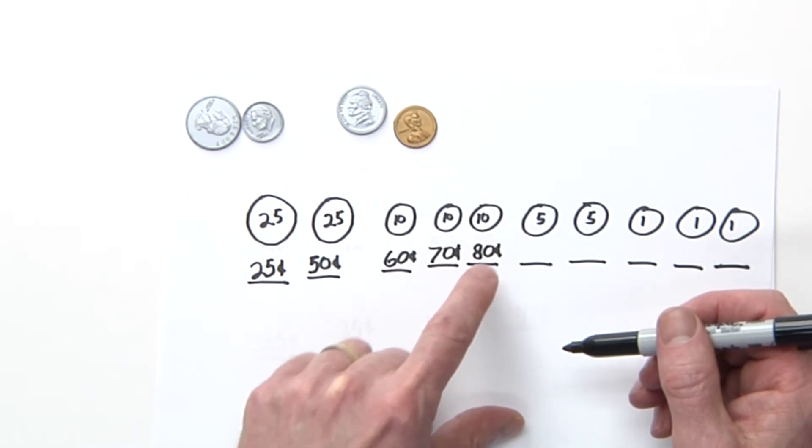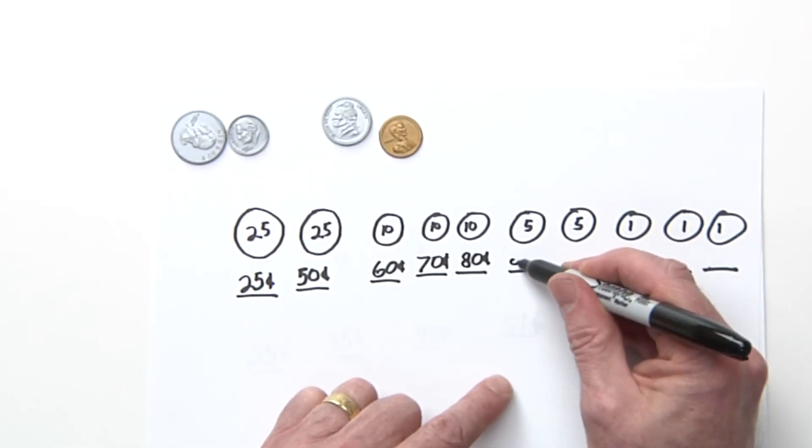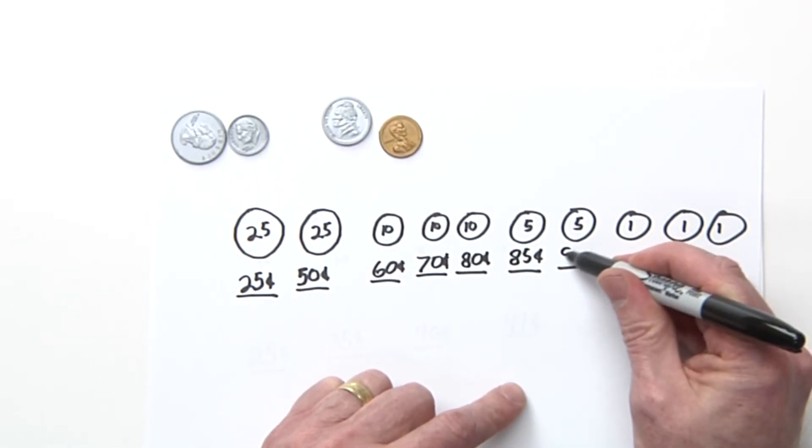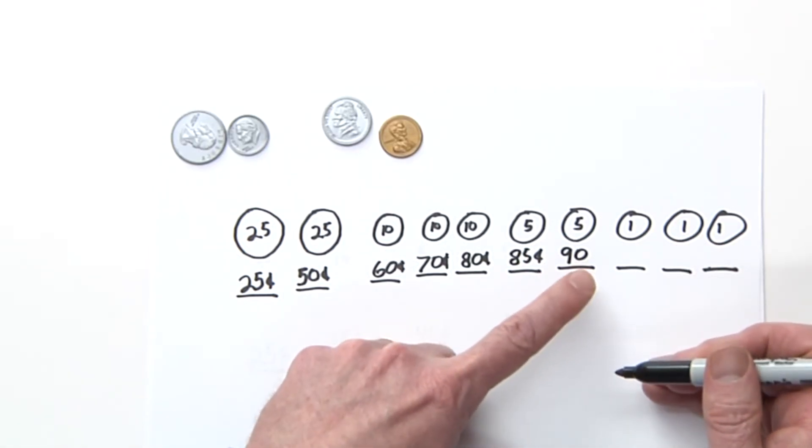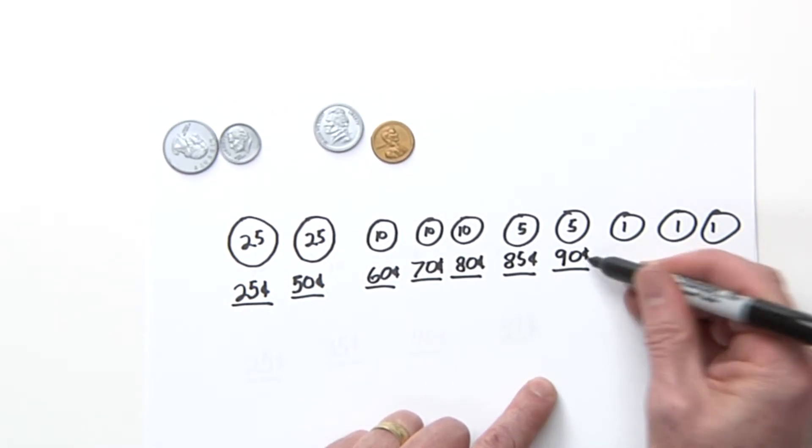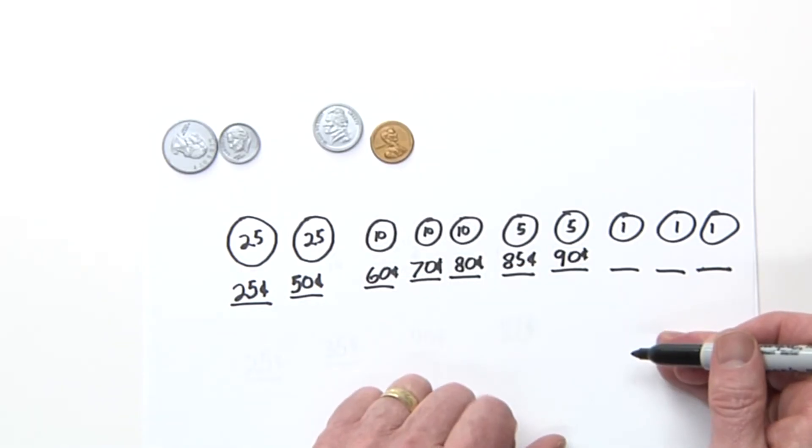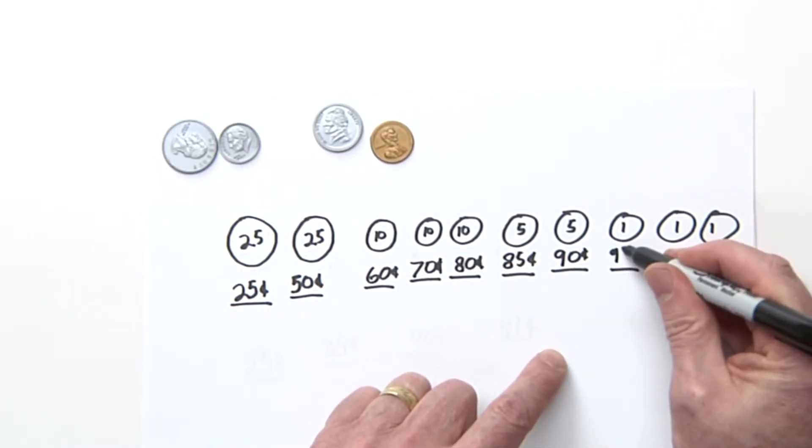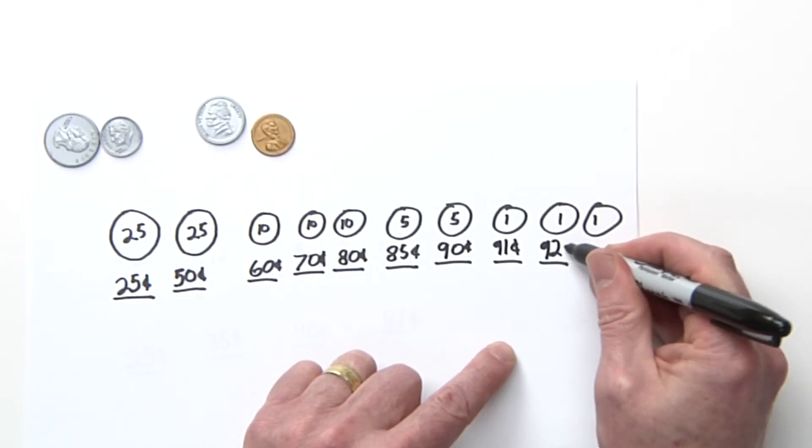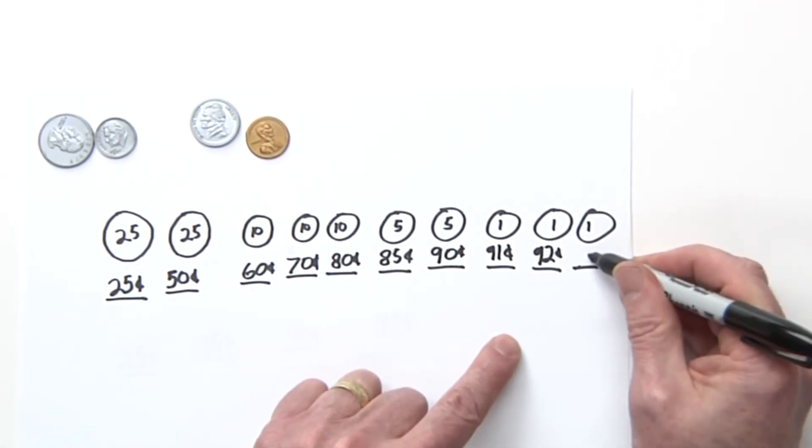80 plus 5 is 85. 85 cents plus another nickel is 90 cents. Now we're going on to pennies: 90 plus 1, 91, 92, 93.